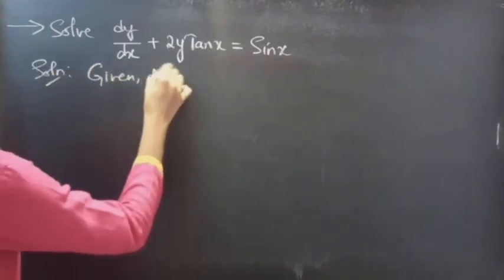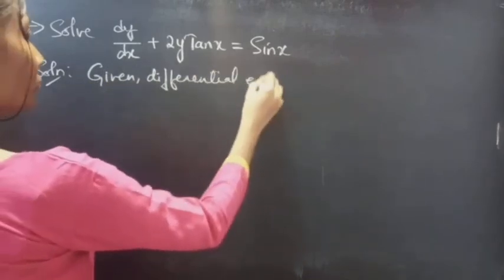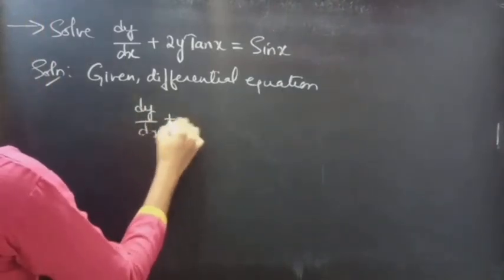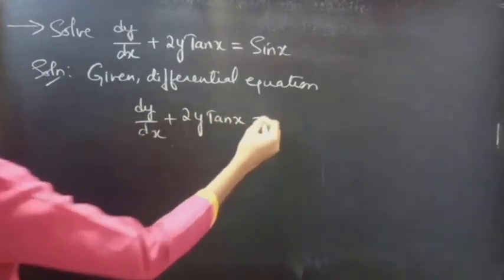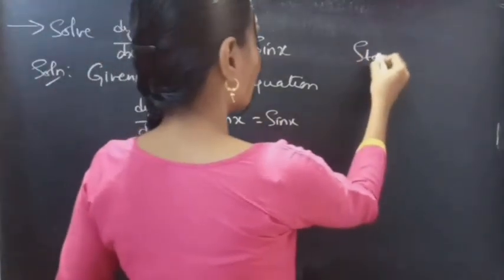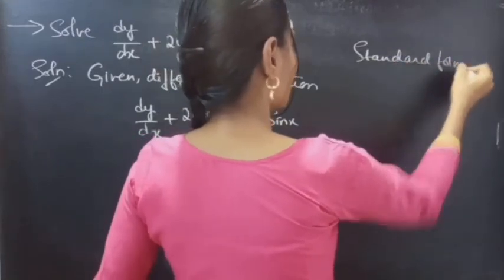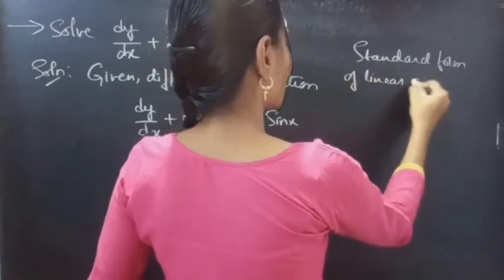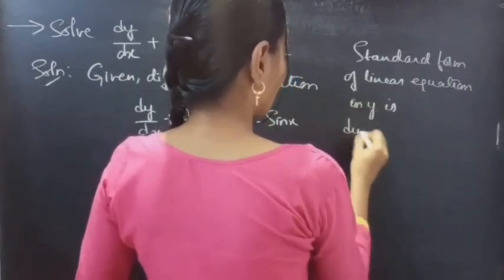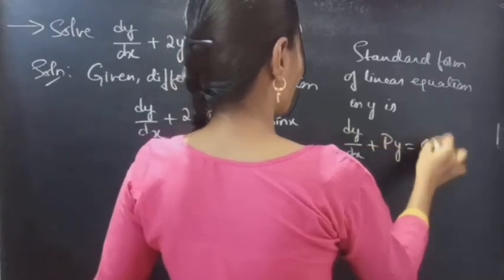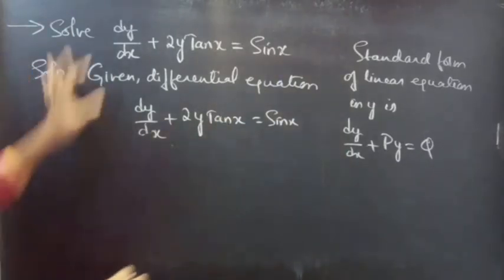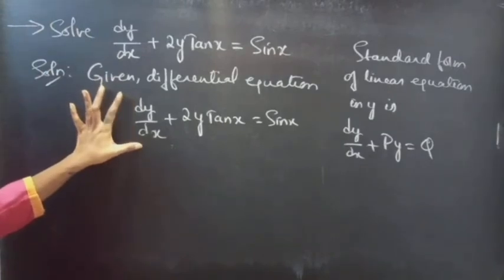Given differential equation: dy/dx plus 2y tan x equals sin x. We know that the standard form of a linear equation in y is dy/dx plus P·y equals Q. By comparing these two, we can say that the given equation is in linear equation in y form.